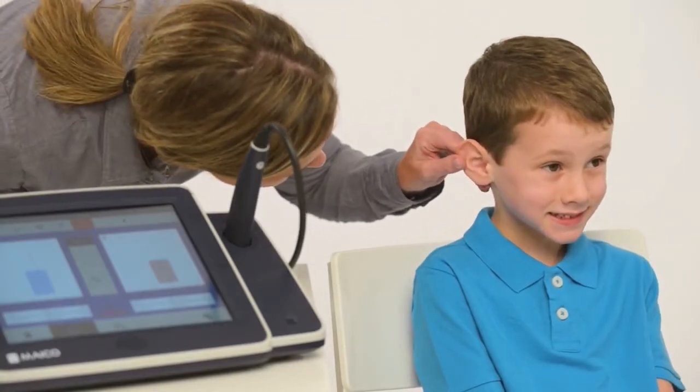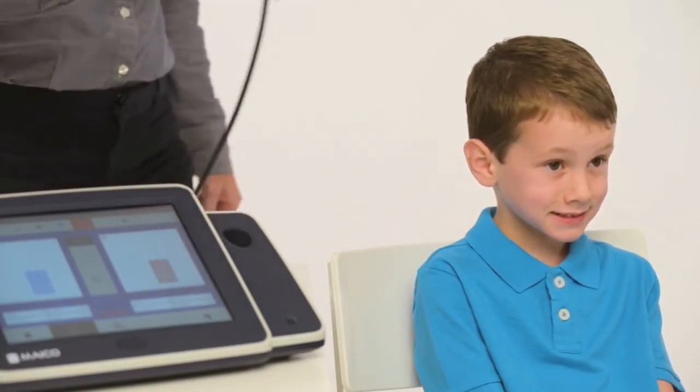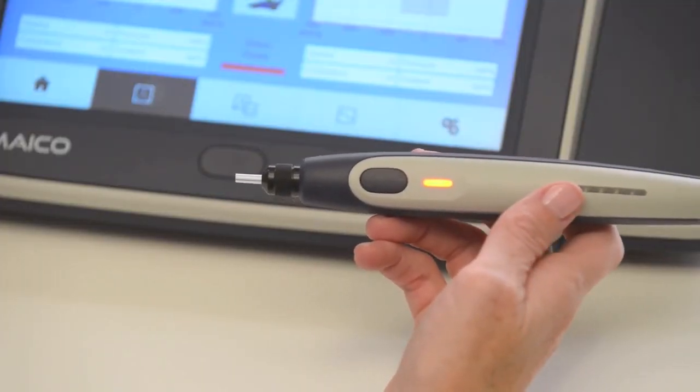When starting a tympanometry test, make a visual inspection of the ear canal to ensure there is no earwax. It is also critical to inspect the probe tip between patients to ensure it is clean and free of debris.